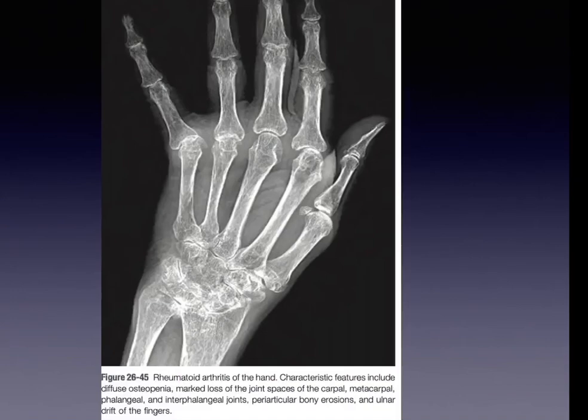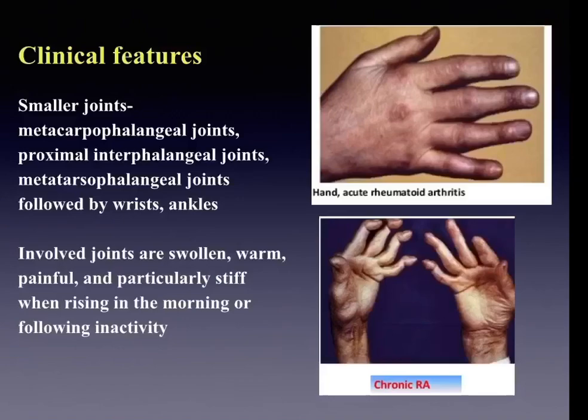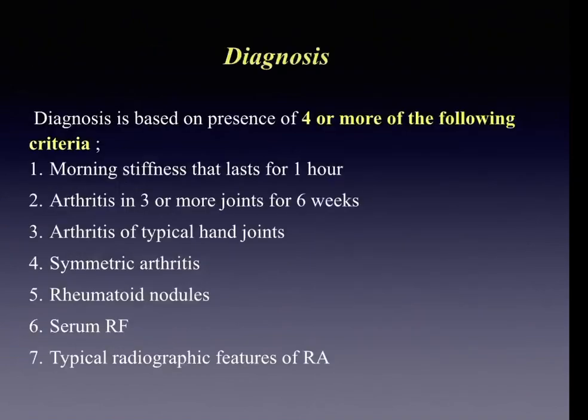The radiological appearance of rheumatoid arthritis shows narrowing of joint space, periarticular bony erosions, and ulnar drift of the fingers. Clinically, it mainly affects smaller joints like metacarpophalangeal joints. In the acute phase, involved joints are swollen, warm, painful, and particularly stiff especially in the morning and following inactivity. Chronic rheumatoid arthritis produces deformities of the fingers.